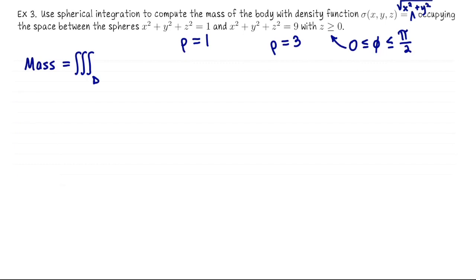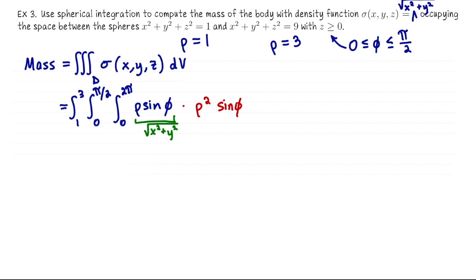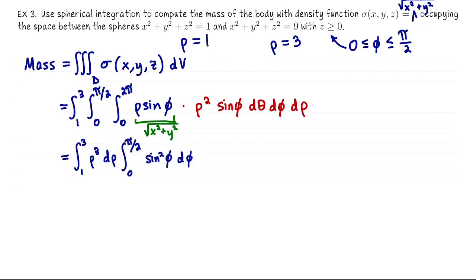Mass equals the triple integral of the density function over this domain. Setting up in spherical coordinates: integral from 1 to 3 for rho, zero to pi over two for phi, zero to two pi for theta. The density sigma equals the square root of x squared plus y squared, which in spherical coordinates is rho sine phi. Multiplying by the Jacobian rho squared sine phi gives rho cubed sine squared phi. With the ordering d theta d phi d rho, we split into three single integrals: integral from 1 to 3 of rho cubed d rho, times the integral from zero to pi over two of sine squared phi d phi, times the integral from zero to two pi of 1 d theta.